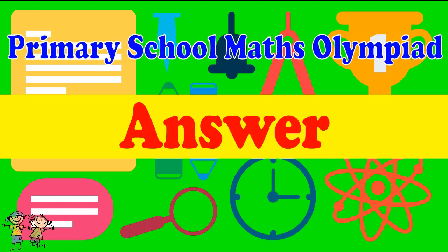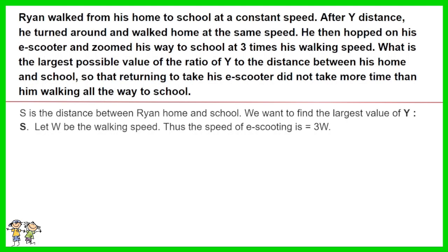Here is the recommended answer. Assume s is the distance between Ryan's home and school. We want to find the largest possible value of the ratio of y to s. Let w be the walking speed. Thus the speed of e-scooting equals 3w.